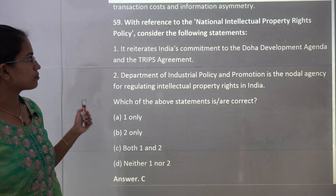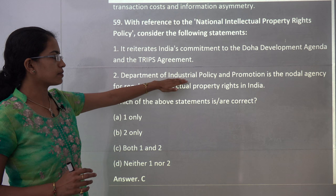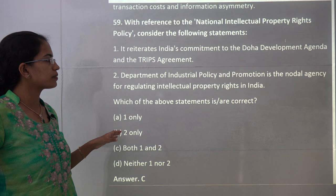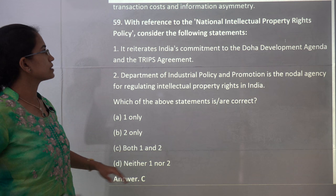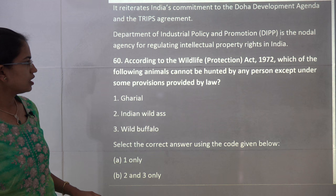The next question is about the National Intellectual Property Rights Policy. It is under DIPP — the Department of Industrial Policy and Promotion — which is the main body regulating intellectual property rights. It also deals with commitments to the Doha Development Agenda and the TRIPS agreement. Both statements 1 and 2 are correct, so the answer is C.